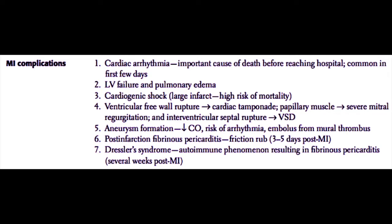The major MI complications include, first, cardiac arrhythmias, which are the most important cause of death before reaching the hospital, are very common in the first few days following MI, and overall are the biggest cause of death following myocardial infarctions. If the myocardial infarction involves a large amount of the left ventricular wall, it's possible to develop left ventricular failure early, and pulmonary edema may develop because of left ventricular failure and backup of blood into the lungs. Cardiogenic shock may occur with a large myocardial infarction, and people with cardiogenic shock generally have a higher risk of mortality.